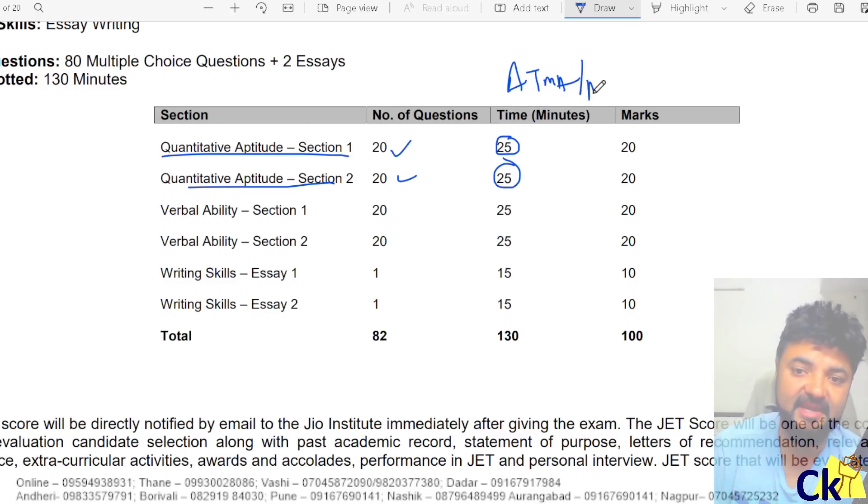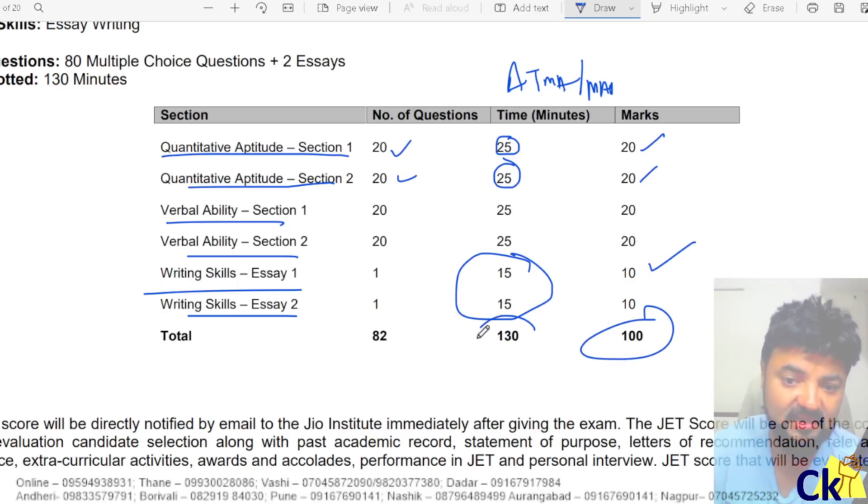You can say ATMA or MAT ka same pattern, 20 questions 20 minutes. Verbal ability 2 sections hai and writing essay writing ke 2 essays aapko likhne hai, 15-15 minute ke under, 10 marks each. Total 100 marks paper, time allocated is 1 hour 30 minutes. So 100 question 100 minutes kind of thing and then 2 essays you have to write.